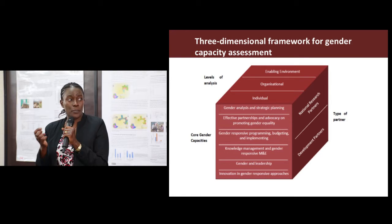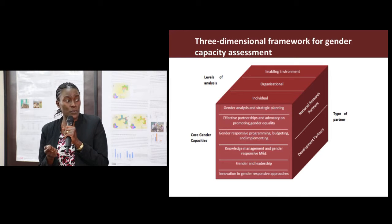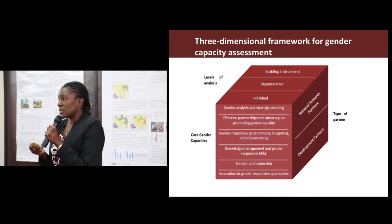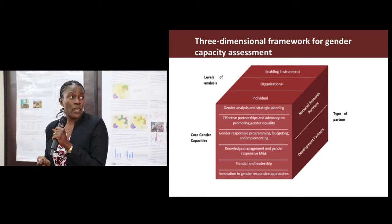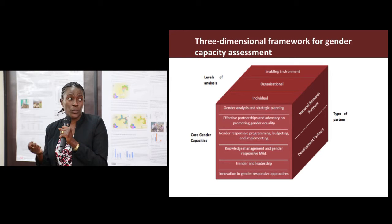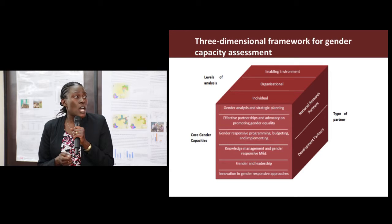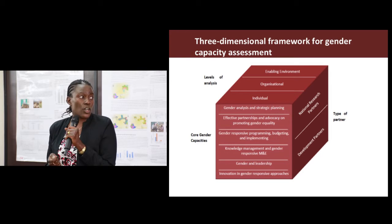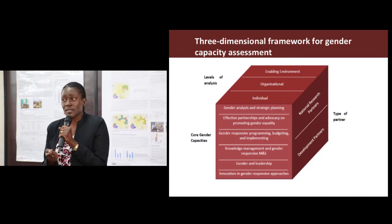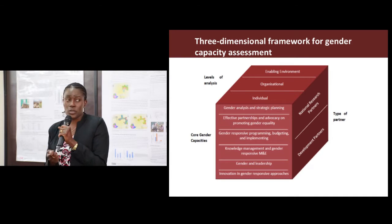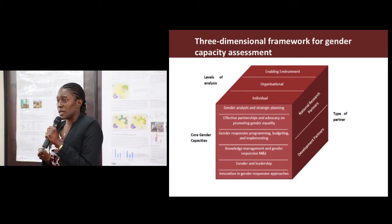Development partners are those who adopt our technologies and bring them to scale, and we also have our national research partners with whom we collaborate in coming up with appropriate technologies. Going back to the core gender capacities — what do we need to do as either staff or partners to be able to integrate gender in our work and close the gender gap in agriculture? One of the core capacities is gender analysis and strategic planning.